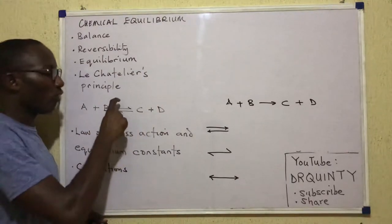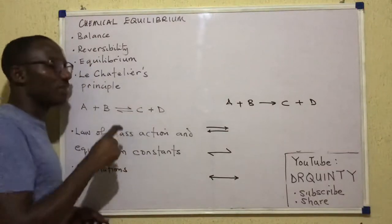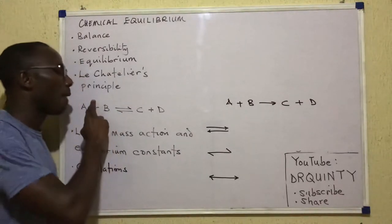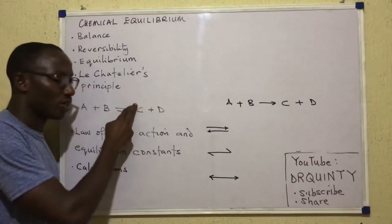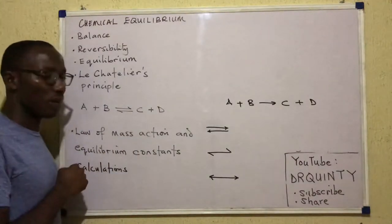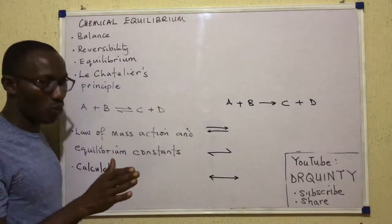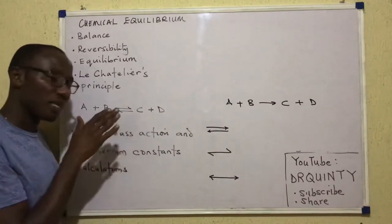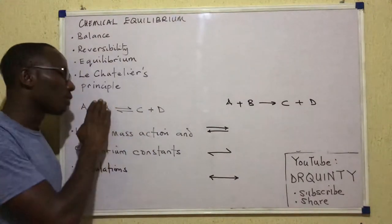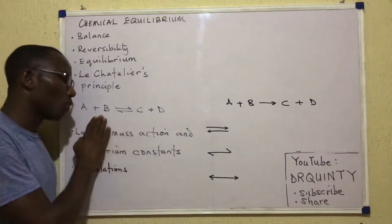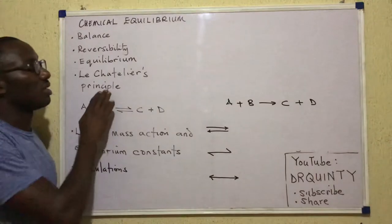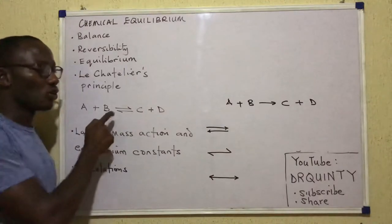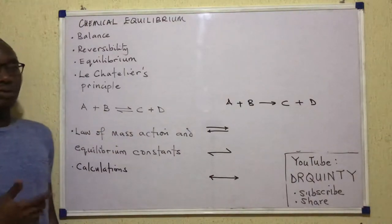So, what does it mean for a reversible reaction to attain equilibrium? It simply means that in that reversible reaction, the rate of the forward reaction has become equal to the rate of the backward reaction. I didn't talk about quantities — I didn't say when the amount of reactants and products become the same. Instead, I talked about rate. When the rate of the forward becomes equal to the rate of the backward, then we say that the reaction has reached equilibrium.